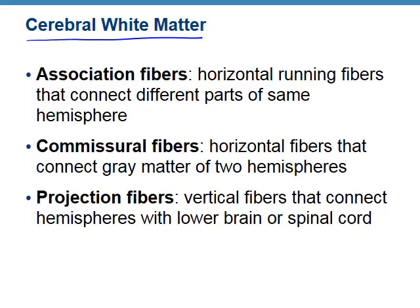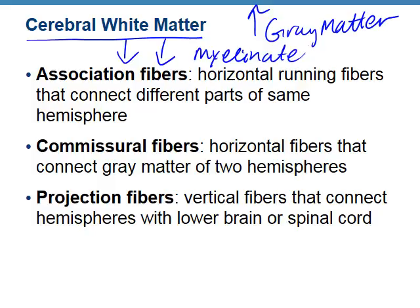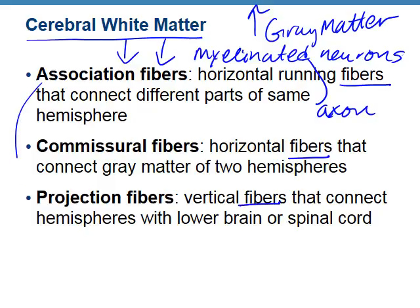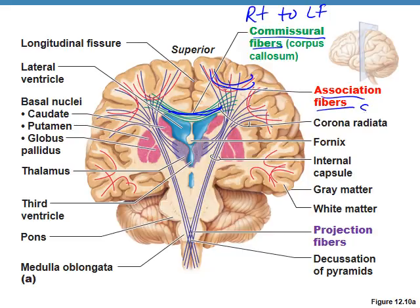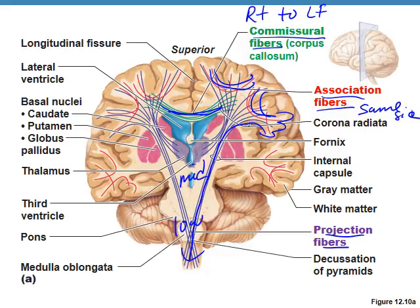Now we need to talk about cerebral white matter. These are myelinated neurons — the myelinated part occurs at the axon, which is why they're called fibers. There are three types: commissural fibers connect the right and left cerebral hemispheres so they can communicate; association fibers are same-side, connecting different parts of the cerebral cortex to each other; and projection fibers connect the cerebral cortex to the mid and lower sections of the brain.